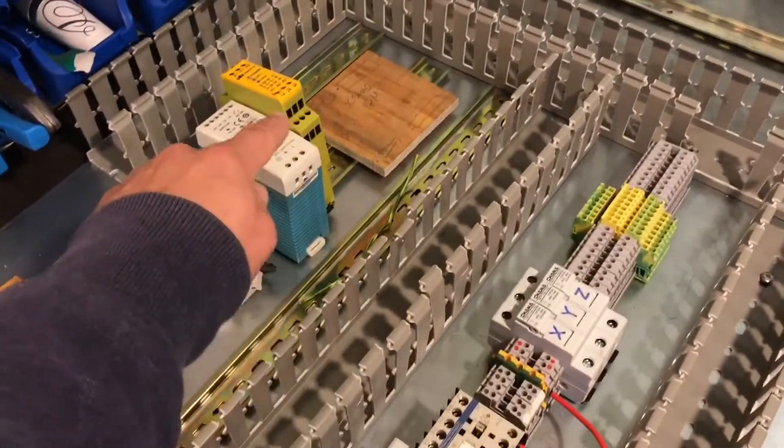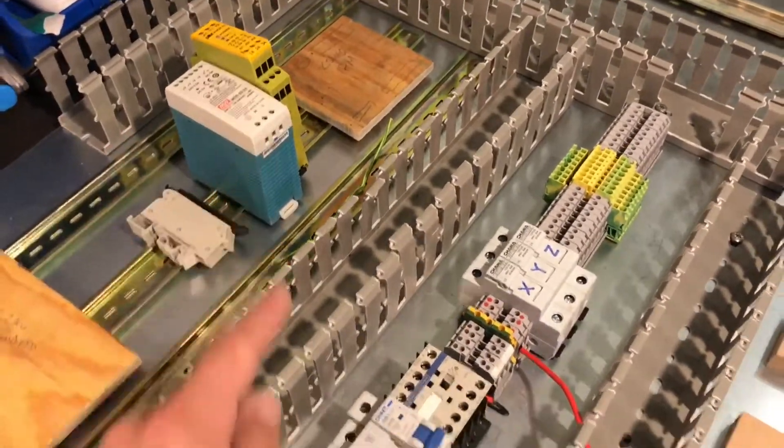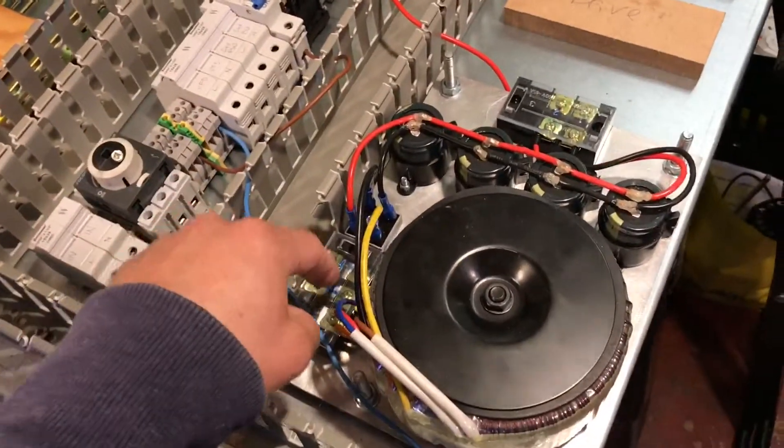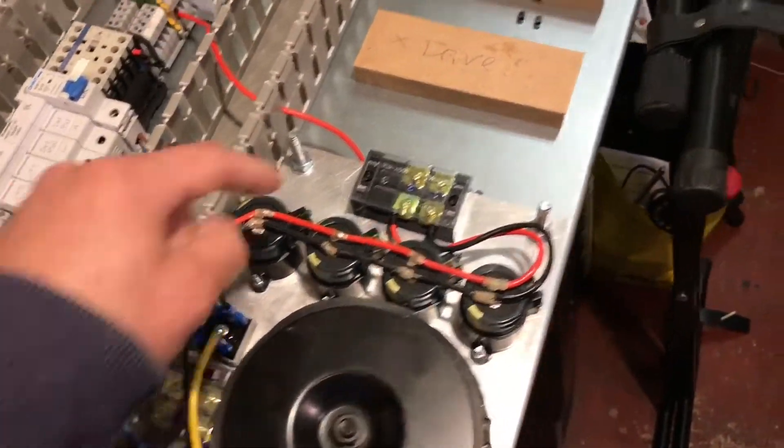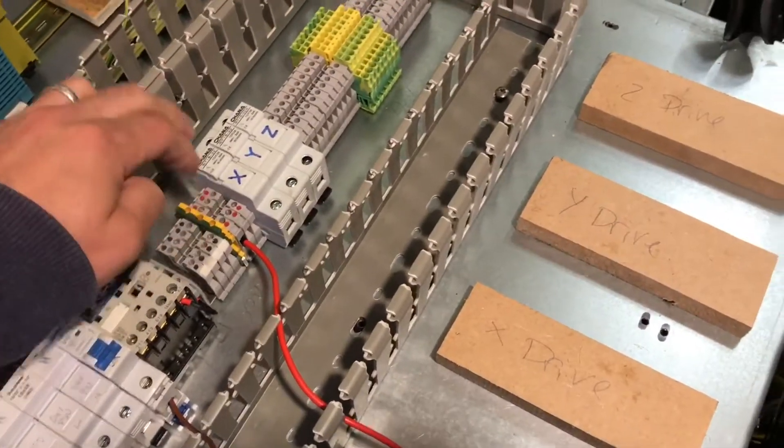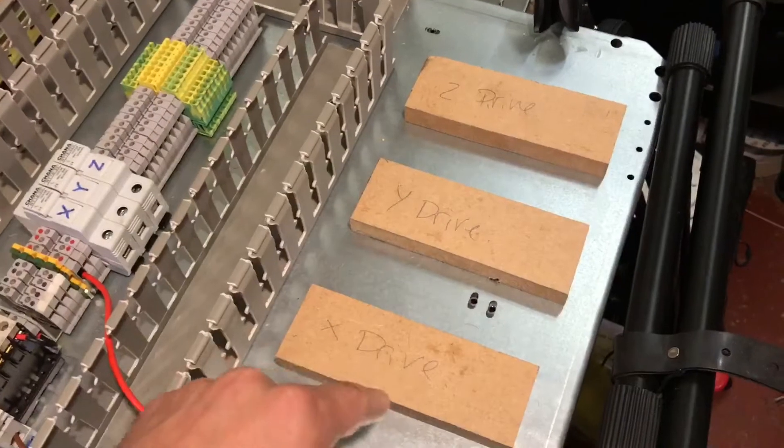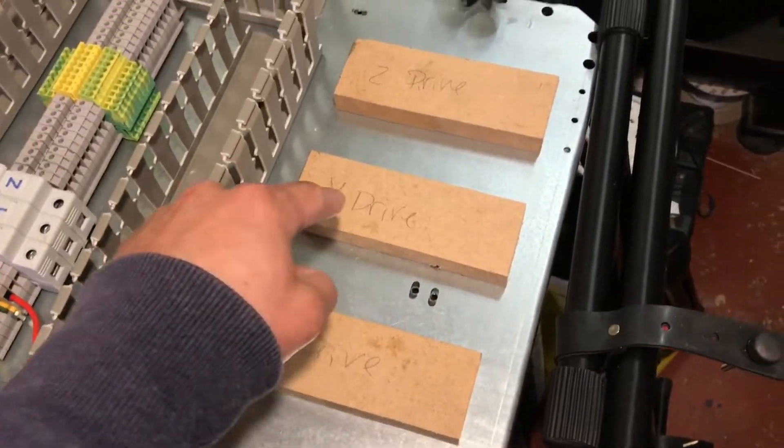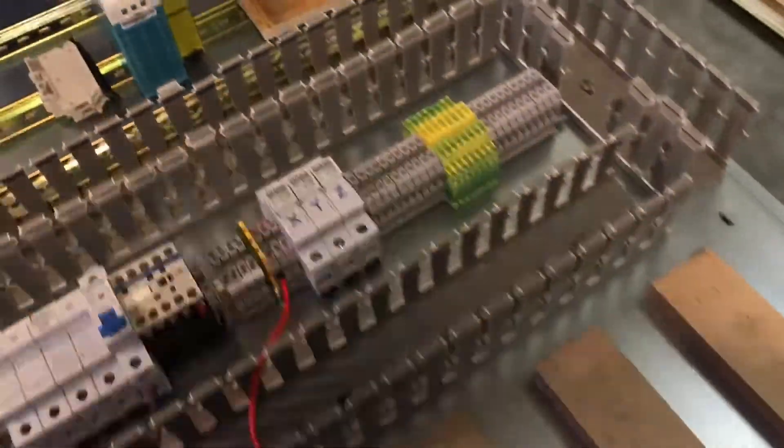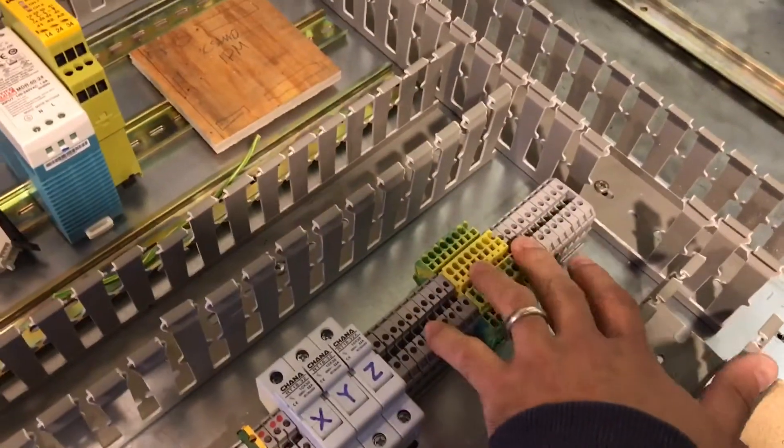Mains via the contactor then into the 80 volt power supply, and then out this side into the 80 volt distribution, and then via fuses then to the drives which are represented by these bits of MDF. And then finally this is 24 volt power distribution, so we've got mains, 80 volt, 24 volt.